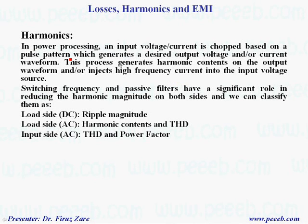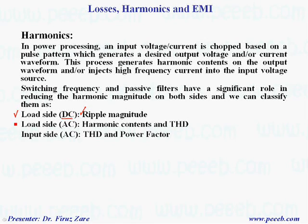Now let's look at harmonics. In power processing, an input voltage or current is chopped based on a pulse pattern, which generates a desired output voltage or current waveform. This process generates harmonic contents on the output and injects high-frequency current into the input voltage source. Switching frequency and passive filters play a significant role in reducing harmonic magnitude. We classify concerns as load-side ripple magnitude for DC output, THD for AC output, and THD and power factor for AC input.